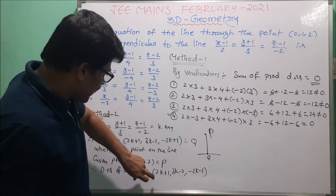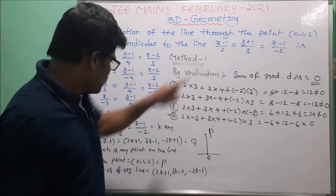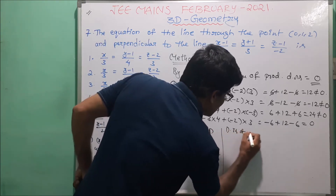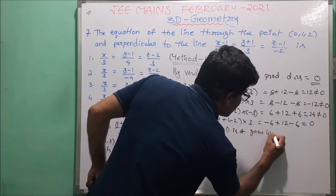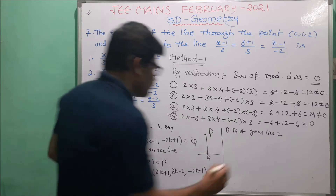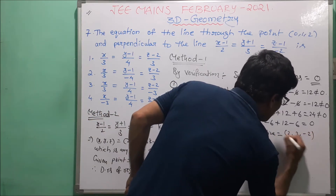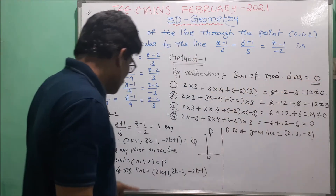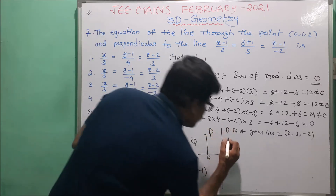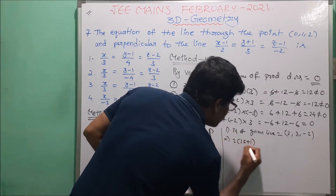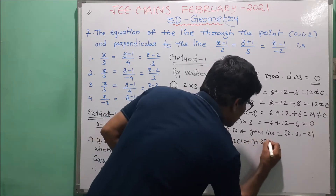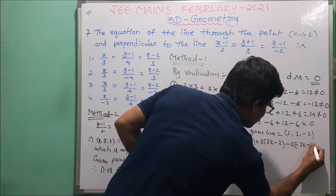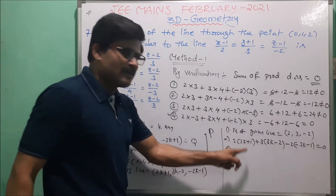The required line is perpendicular to the given line, whose DRs are (2, 3, minus 2). Using the condition sum of product of DRs equals zero: 2 into (2k plus 1) plus 3 into (3k minus 2) plus minus 2 into (minus 2k minus 1) equals zero.